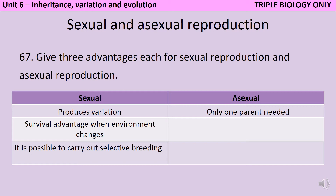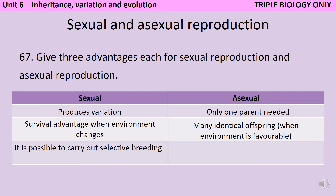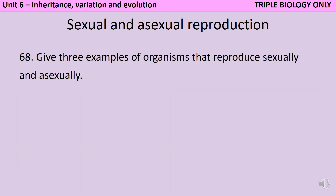In contrast to sexual reproduction, which is really useful when the environment is changing, asexual reproduction is a good way to go when the environment around you is static and you are already being really successful in it. If you know that you're successful in your environment and it's unlikely to change, then clones of you would also be successful. Also, asexual reproduction is often faster than sexual reproduction. Although most organisms reproduce either sexually or asexually, there are plenty of examples of organisms that can employ both strategies and choose which one is most appropriate to their current situation.